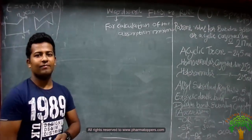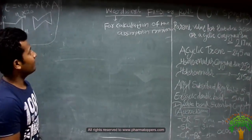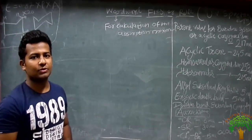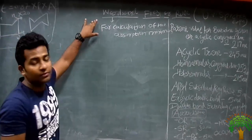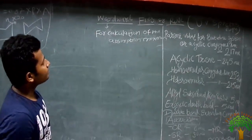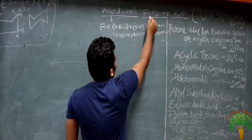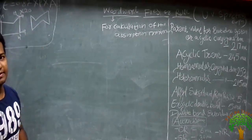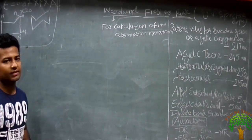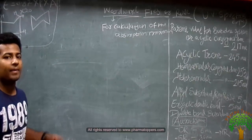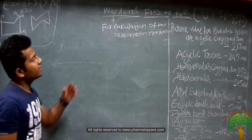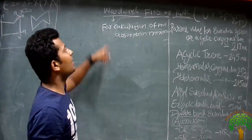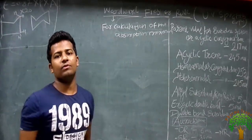Hello friends, welcome to Pharmadobus. Today we are going to discuss one of the most important topics in UV spectroscopy — that is the Woodward-Fisher rule. Most of the time, for determining, differentiating, or identifying structures, we have to know the lambda max of the structure. For this purpose, we calculate the lambda max of a specific compound using this rule — the Woodward-Fisher rule.